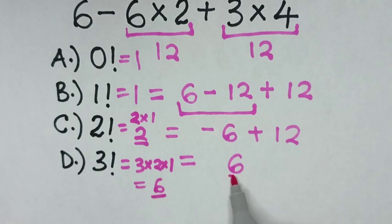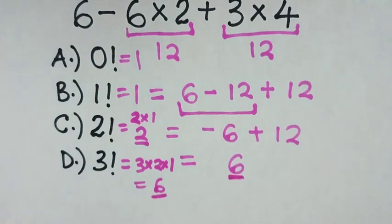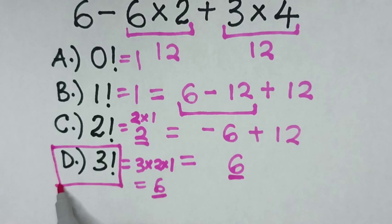So, when you compare, they are the same answers. Therefore, D, 3 factorial, is the correct answer.